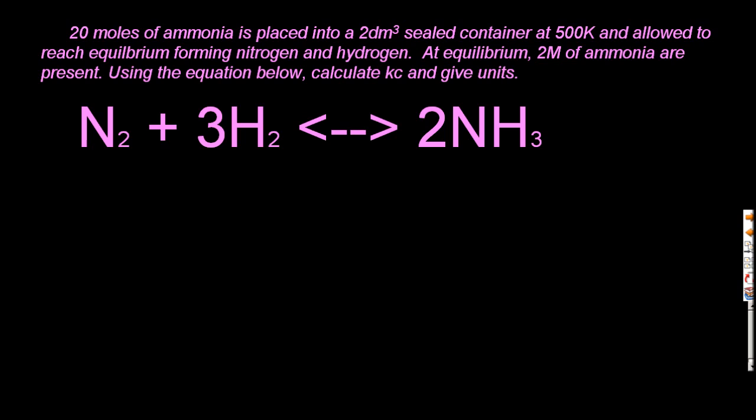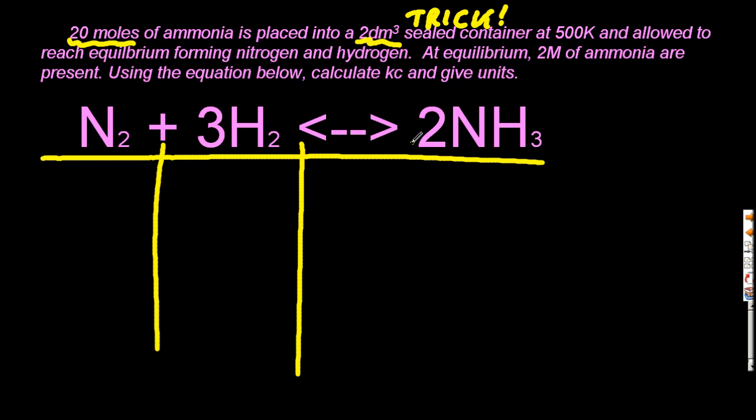Let's try another one with a fairly obvious trick, but a trick that will always play on you. This has no initial concentrations, so you can't do this unless you see the little trick, which is the 20 moles of ammonia is in 2 decimeters cubed. You can just do concentration is moles over volume, and that will give you the initial concentration of ammonia.